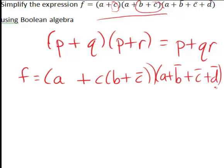Now before we go any further, I would then simplify in the brackets here to see if we can reduce that first part down further. That becomes a plus c b plus c c bar.